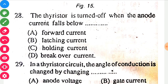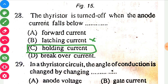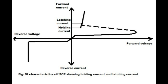The thyristor is turned off when the anode current falls below — the correct option is C: holding current. In the answer section they may have written latching current, but the correct option is holding current because it is the minimum value of anode current below which the SCR cannot maintain current and turns off. Latching current is the minimum value required to keep the SCR in conducting state, but since the question asks about turning off the thyristor, holding current applies.